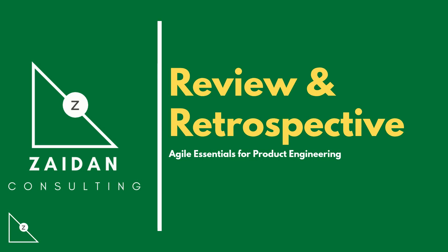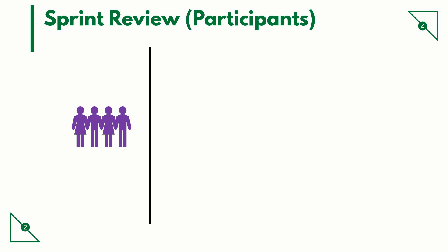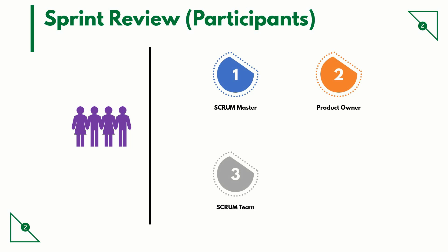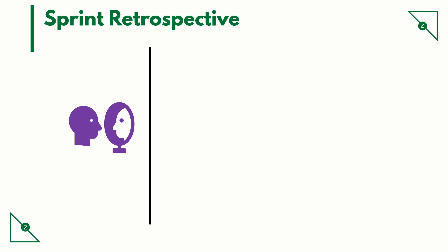The sprint review is a meeting where the Scrum team demonstrates to the customer and stakeholders the work they have accomplished over the sprint, and they compare it to the commitment given at the beginning of the sprint. The participants in the sprint review include the Scrum Master, the Product Owner, the Scrum team, and other stakeholders — whoever is impacted by the work. Keep in mind the team demonstrates working code.